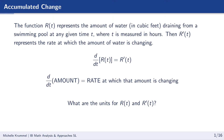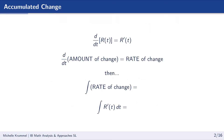What are the units for r of t and r prime of t? The units for r of t are cubic feet. The rate of change in the amount of water would be measured in cubic feet per hour. r prime of t is measured in cubic feet per hour. So if we take the derivative of an amount of change, we get a rate of change.